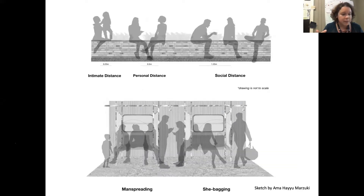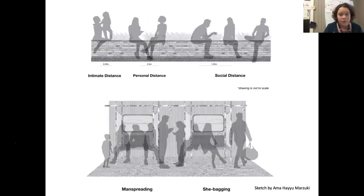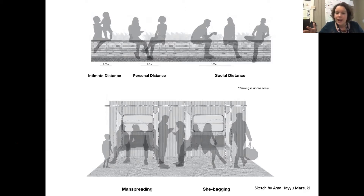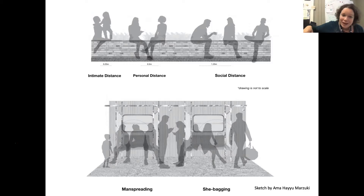Each of us carries an invisible personal space bubble that helps us negotiate space. It explains why we feel uncomfortable when strangers sit next to us on an airplane and why we sit closer to good friends than to our boss. Personal space boundaries differ by culture, personality and gender. Edward Hall first described how we manage this, identifying zones from intimate distance through personal, social and public distance.